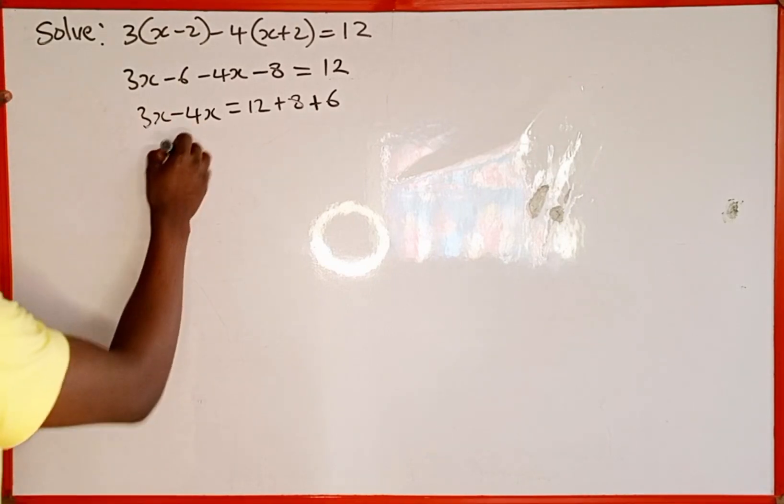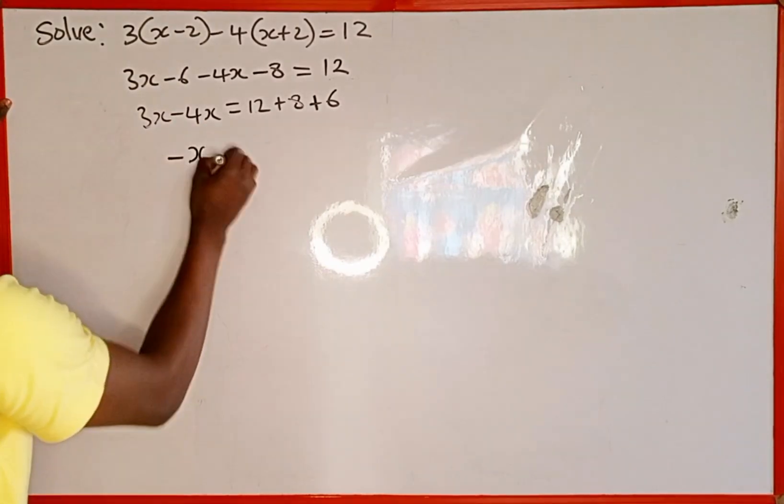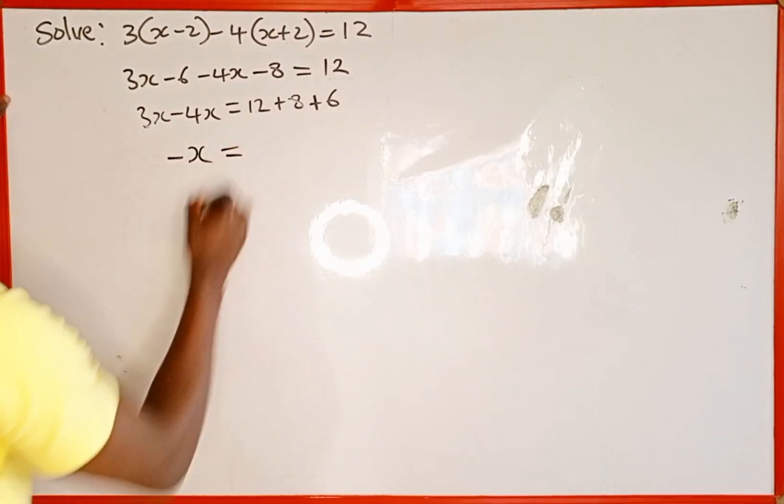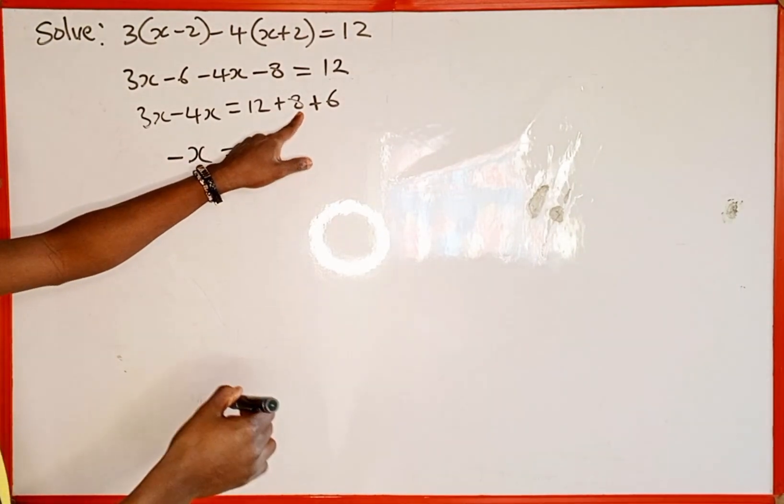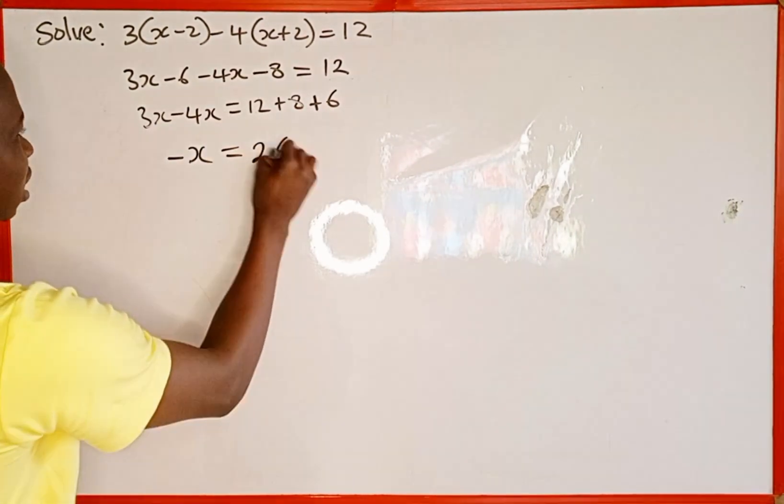Now 3x minus 4x is the same as minus x which is minus 1x which is equal to 12 plus 8 is 20. Then 20 plus 6 is going to give us 26.